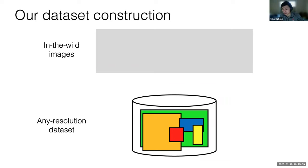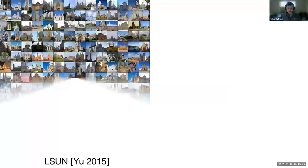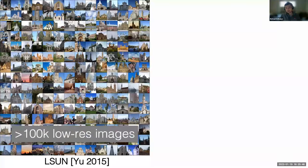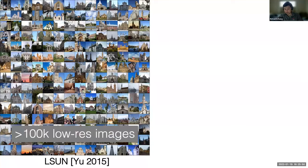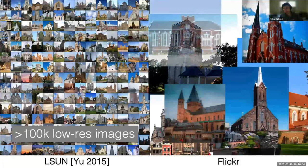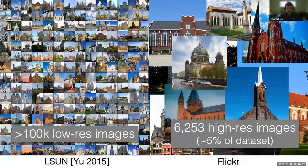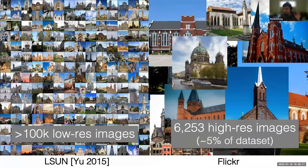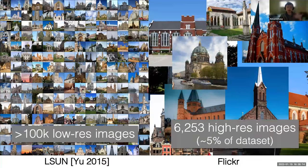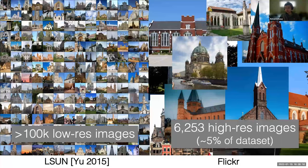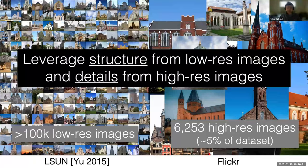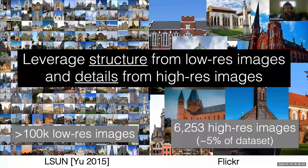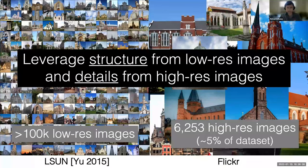Here we're producing what we'll call this any resolution dataset. The good thing about this is you don't have to start from scratch. We can leverage the hard work that previous researchers have done. For example, let me take the LSUN dataset, which has over 100,000 low res images of different categories. For example, here churches. We can go on Flickr and grab just a few images of high res churches. Here we're just grabbing about 6,000 images, which is going to be about 5% of this overall dataset between the low res and high res images. What we're hoping for is a system that's able to take advantage of all this data that's able to leverage the structure of the low res image, as well as the high frequency details of the high res images.